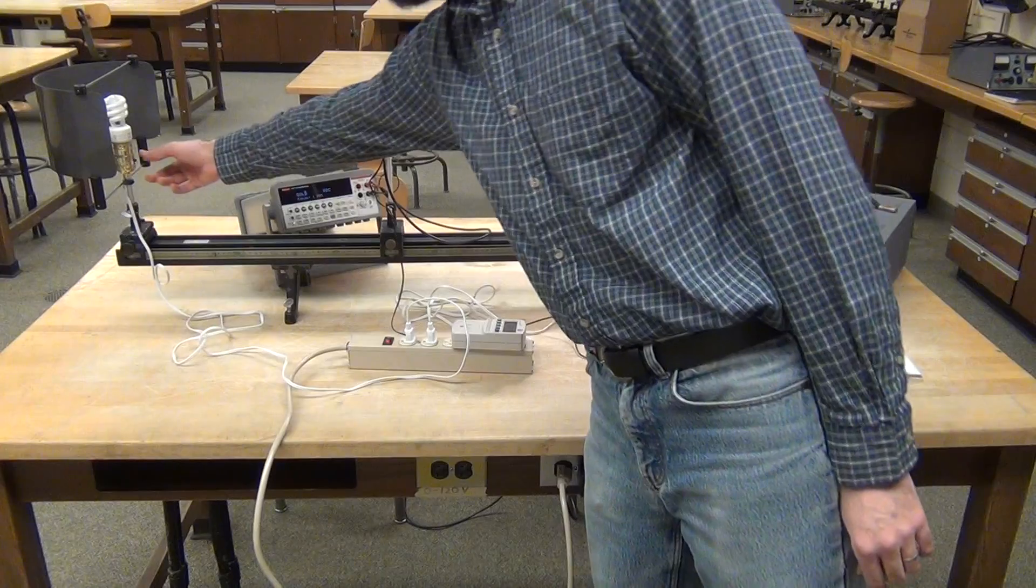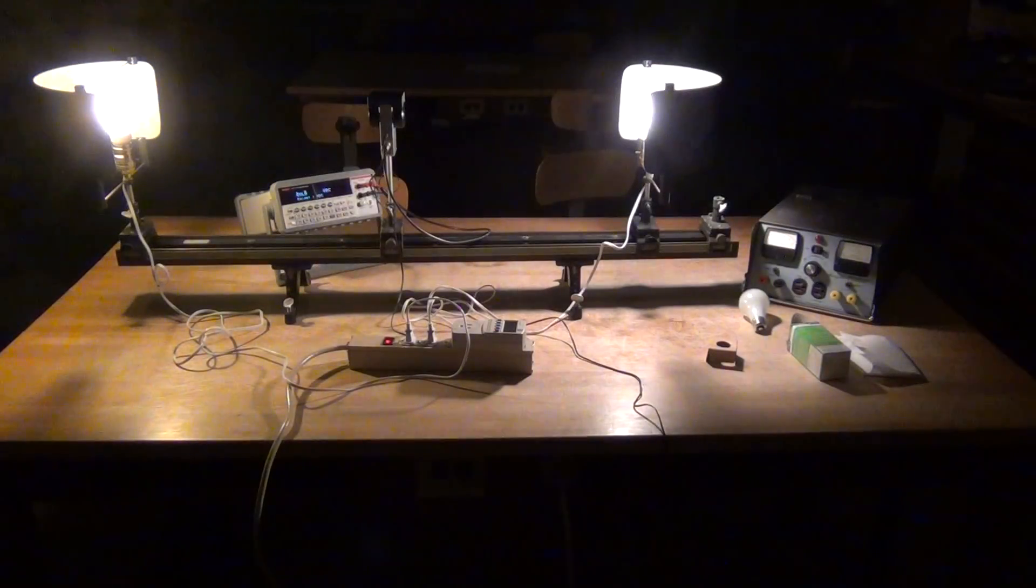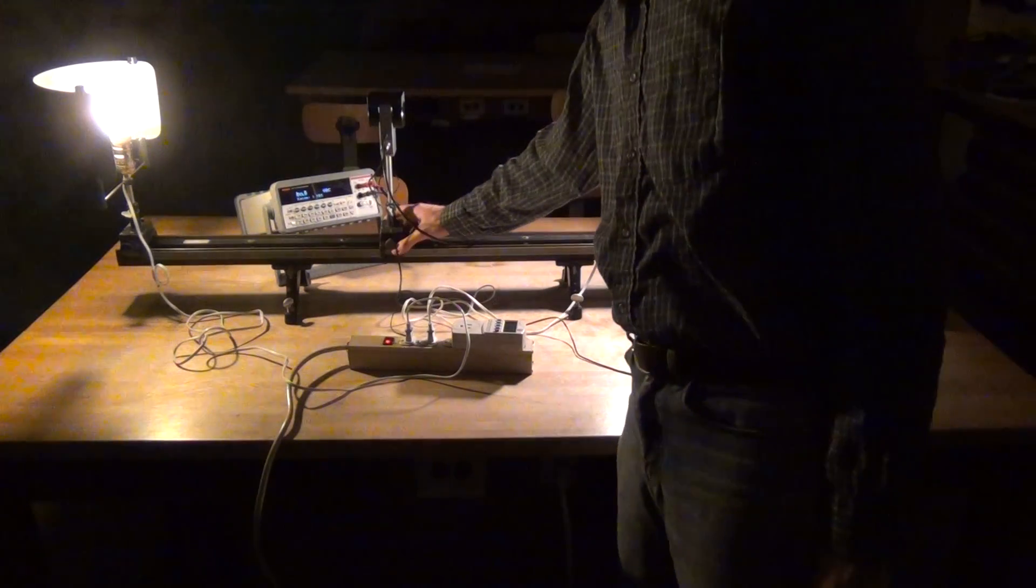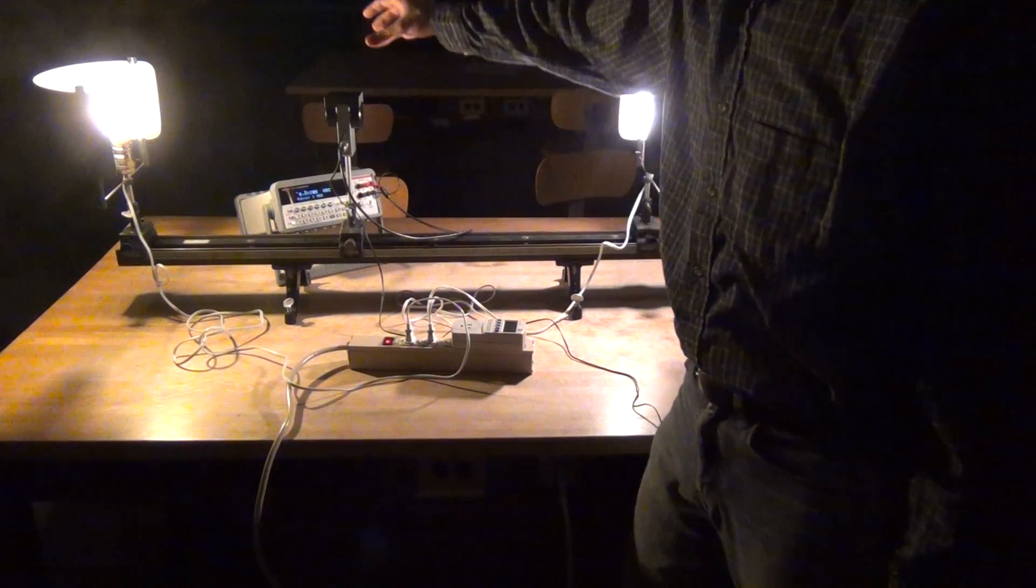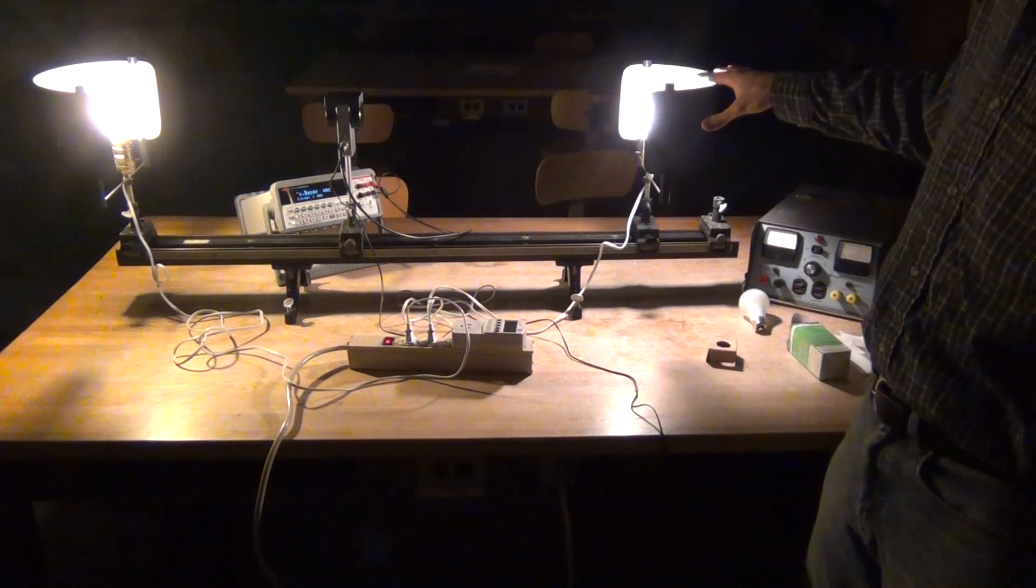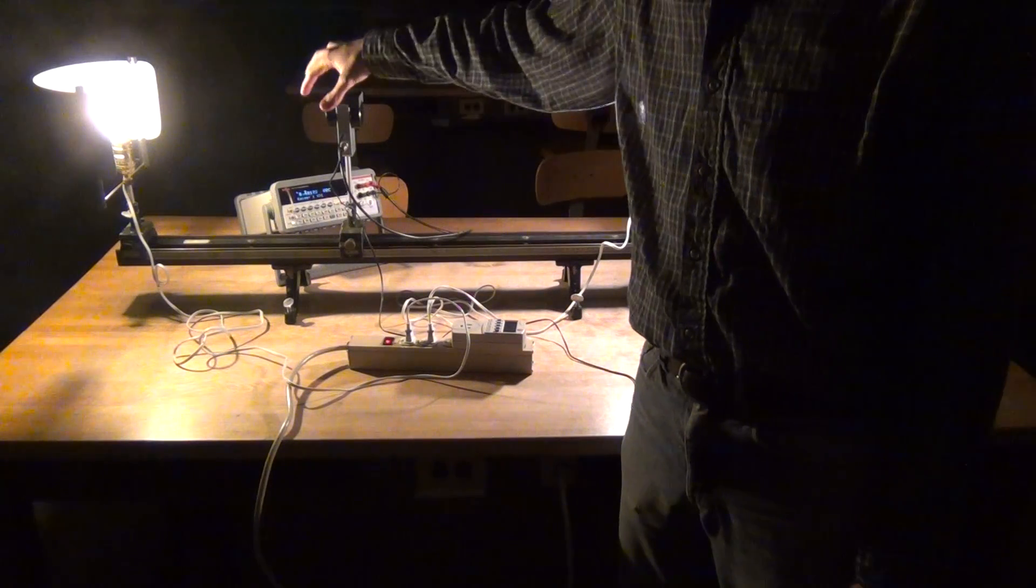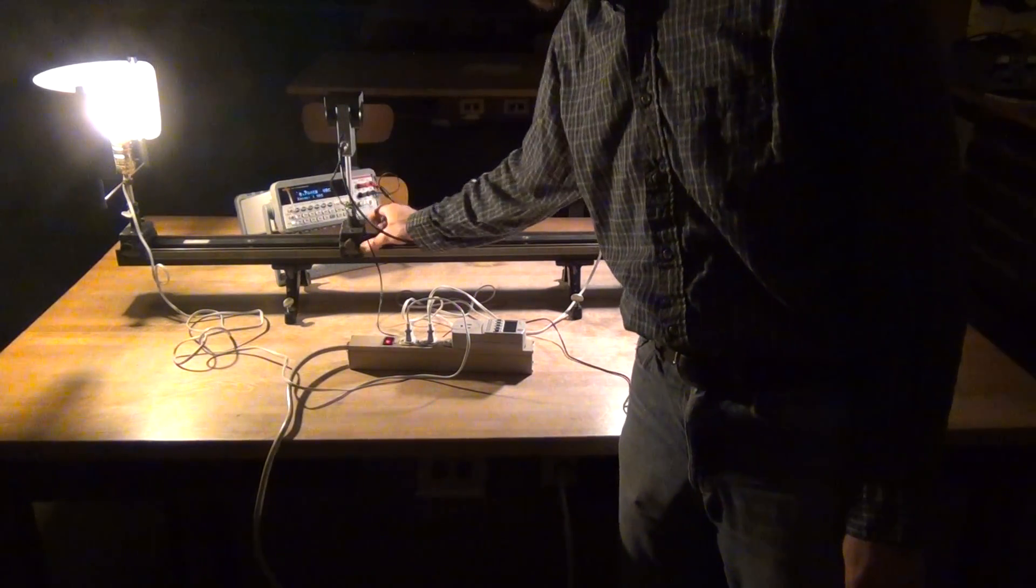When we actually do the experiment, the room lights will be off. The photoresistor box tells you at what point you have equal intensity striking both sides by outputting a zero voltage.